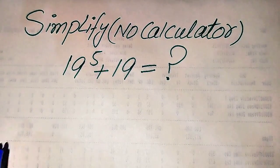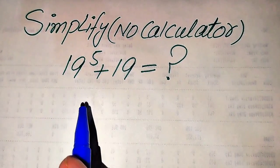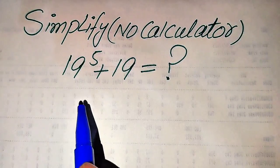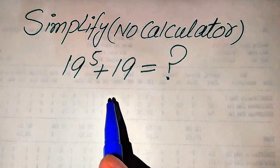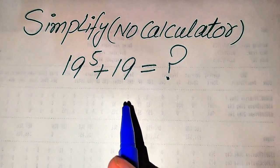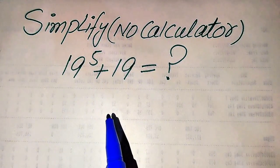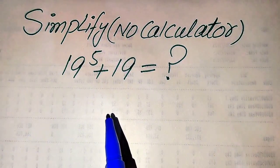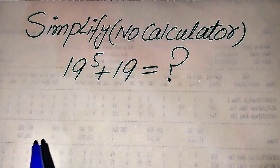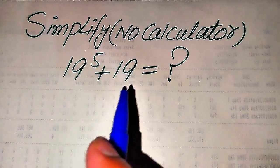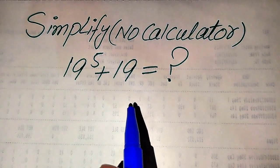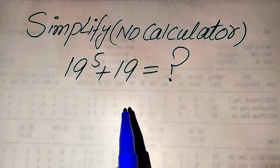Hello everyone, today I want to simplify this nice algebraic expression: 19 to the power of 5 plus 19, and we write this algebraic expression into the simplified form. Calculator is not allowed in this problem, which means that we will show all of the working on this paper.